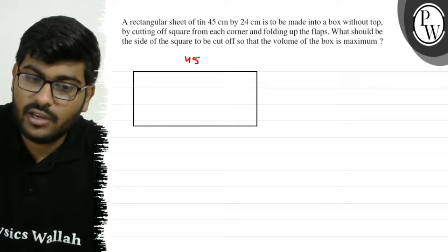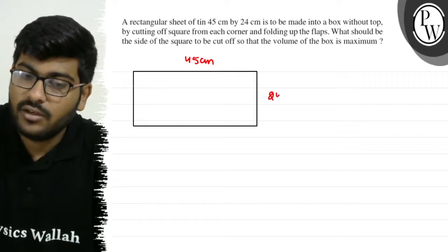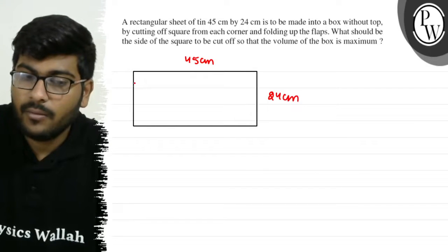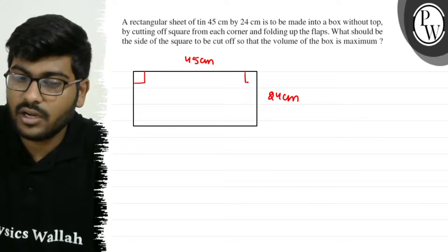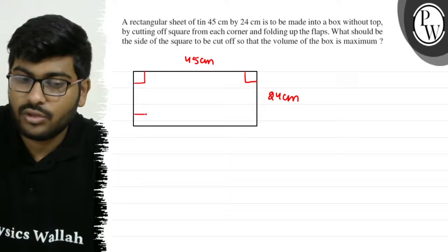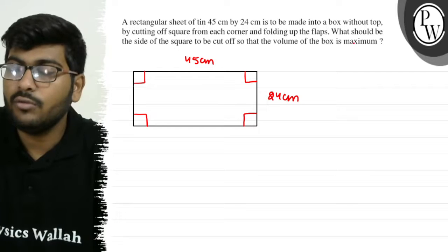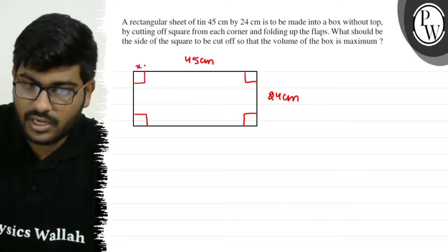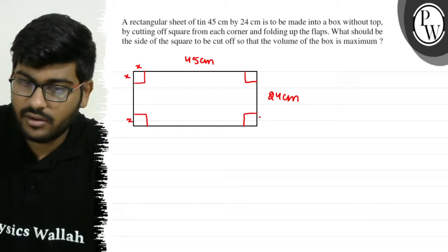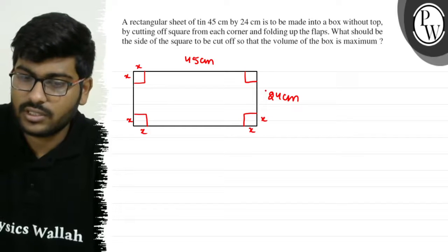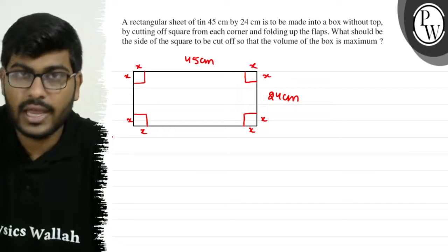So we have 45 cm by 24 cm. If you cut corners from the corners, how much length will be cut so that volume is maximum? Let's see, this is x, this is also x, this is also x, this is also x, and this is also x.